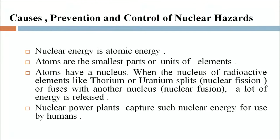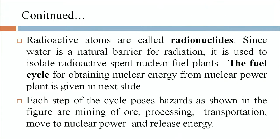The next section is nuclear hazards — their causes, prevention and control. Nuclear energy is atomic energy. Atoms are the smallest unit of elements and have a nucleus. When the nucleus of radioactive elements like thorium or uranium splits (nuclear fission) or fuses with another nucleus (nuclear fusion), a lot of energy is released. Nuclear power plants capture such energy for human use. Radioactive atoms are called radionuclides. Since water is a natural barrier for radiation, it is used to isolate radioactive spent nuclear fuel. The fuel cycle for obtaining nuclear energy from a nuclear power plant is shown in the next slide.